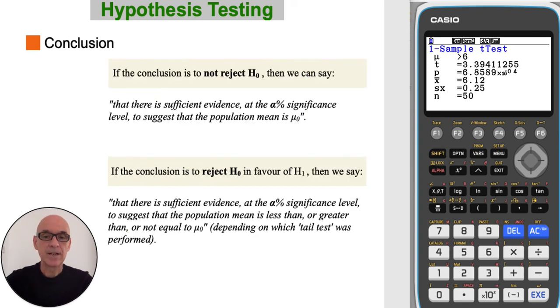If we accept the null hypothesis, we would state that there is sufficient evidence at the given significance level to suggest that the population mean is what it was. If we reject the null hypothesis, we state the mean is less than or greater than or not equal to what it was, depending on which tail test was performed.